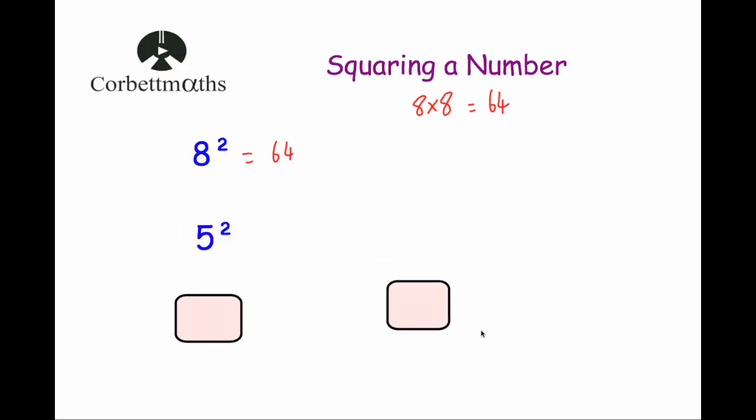Our next question is 5 squared. 5 squared means 5 times 5, and 5 times 5 is 25. So the answer is 25.